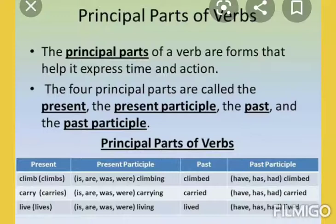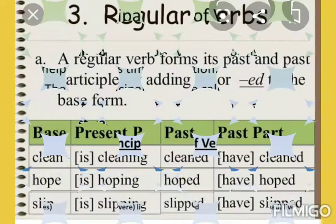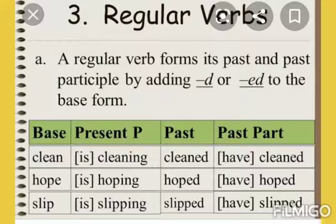The principal parts of verb help to express the time and action of a sentence, telling us at what time the thing is being done. We have already studied the four principal parts: present, present participle (the ing form of verb), past, and past participle. Now, regular verbs — in our tenses chapter I explained that regular verbs form the past tense by adding D or ED to the base form.